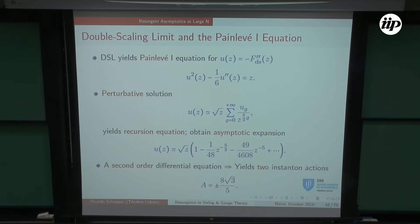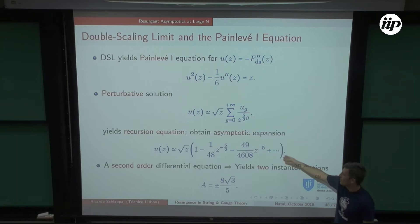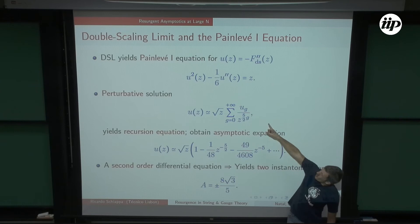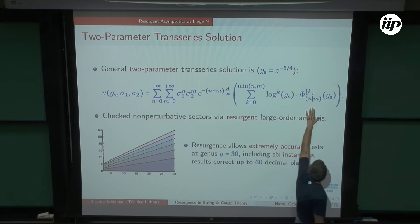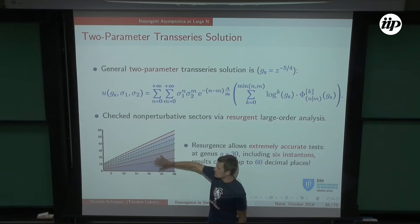Plugging the perturbative ansatz back into the Painlevé I differential equation, you get a recursion for rational coefficients that grow as (2G)! — the series is asymptotic. The resurgent trans-series solution has plus-A and minus-A sectors — the string theory hiding inside — with N/M instanton sectors. We computed on the order of 200 genera and ~5–6 instanton numbers for this fully non-perturbative solution. We've done many resurgent checks, including in the double-scaling limit.